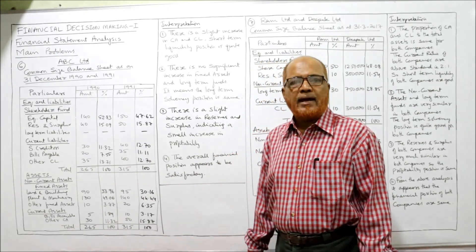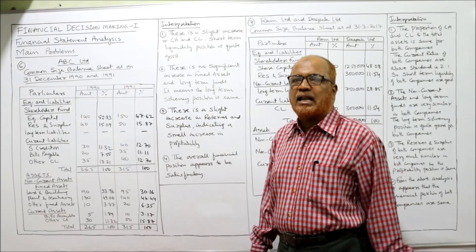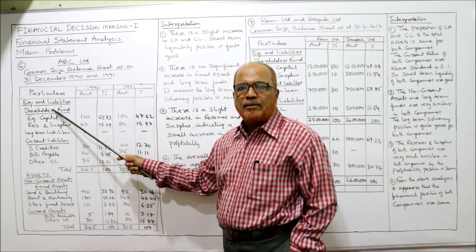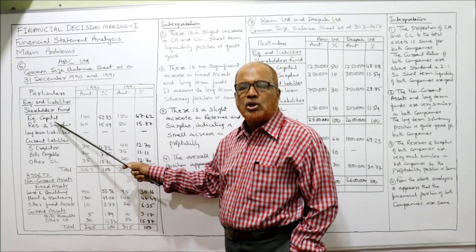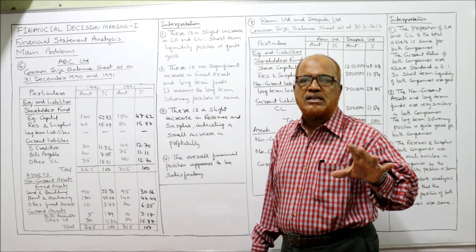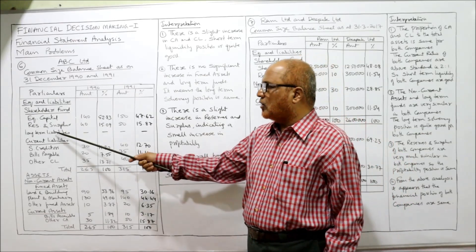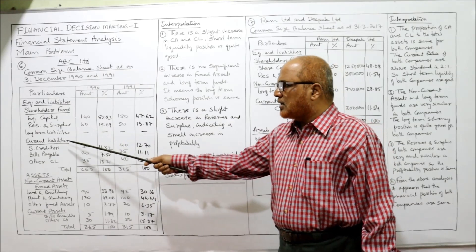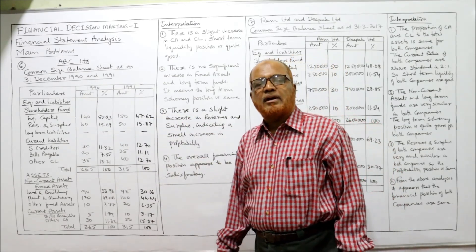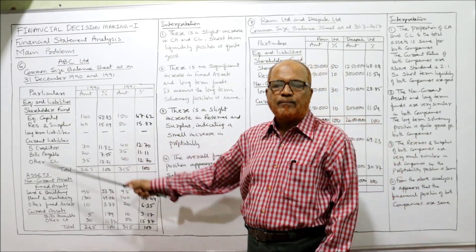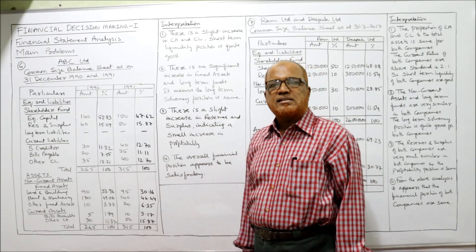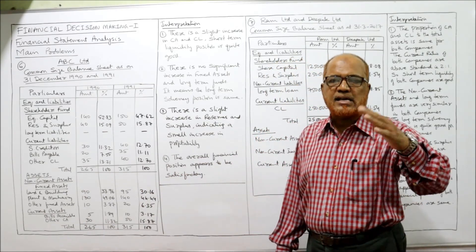The format for ABC Limited's common size balance sheet as on 31st December 1990 and 1991 has columns: amount, percentage, amount, percentage. The format suitable for analysis is vertical. Under equity and liabilities: shareholders' fund (share capital and reserves), then long-term liabilities — if long-term loan or debentures are present that would come here, but we don't have any so put a dash — then current liabilities: sundry creditors, bills payable, other current liabilities. Total equity and liabilities divides into three categories: shareholders' fund, long-term liabilities, and current liabilities.